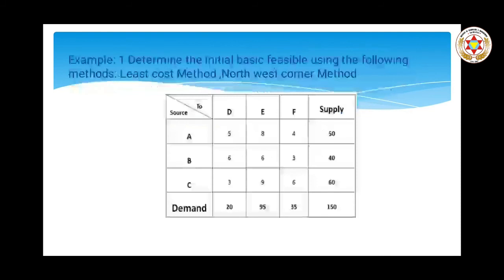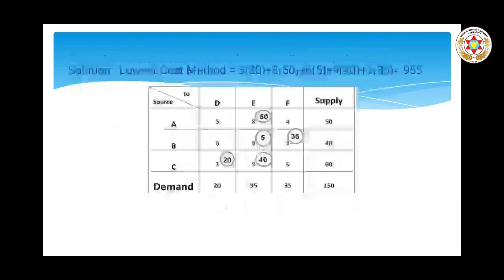Now we will determine the initial basic feasible solution using the least cost method and northwest corner method on a numerical example. The table shows sources, demands, and supplies. This is a balanced problem because there are three rows and three columns, and the sum of supply and demand is 150.